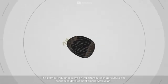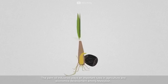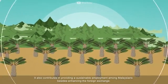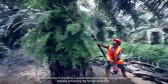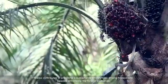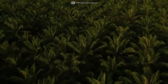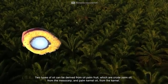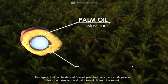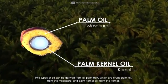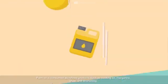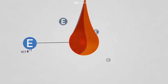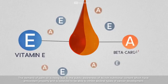The palm oil industry plays an important role in agriculture and economic development among Malaysians. It also contributes to providing sustainable employment and enhancing foreign exchange. Two types of oil can be derived from the oil palm fruit: crude palm oil from the mesocarp, and palm kernel oil from the kernel. Palm oil is consumed as refined products such as cooking oil, margarine, ghee, and shortening.